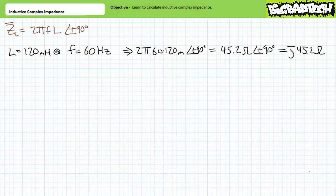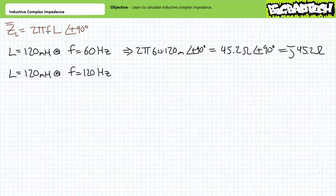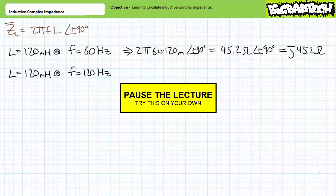Introductory AC circuit analysis scenarios largely involve the use of this basic impedance formula. Let's gain some practice using it with some example problems. First problem: what happens to the complex impedance of this 120 millihenry inductor if I double the frequency to 120 hertz? No calculations — just think about it. Does the magnitude and direction of the respective complex impedance decrease, increase, or remain the same? Take the batteries out of your scientific calculator, put it on the table and put your hands in the air. Just look at the formula and answer the question. Pause the lecture and think about this.